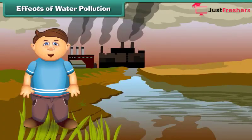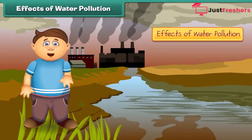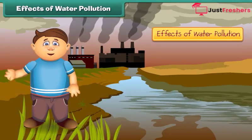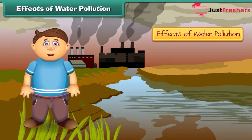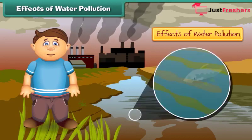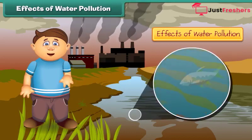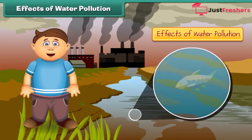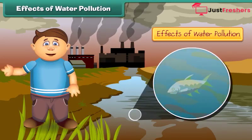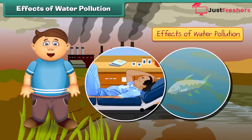What are the effects of water pollution? Poisonous chemicals released from factories and industries enter the water bodies, due to which marine life is getting affected. If we consume such fish, we will also fall ill.